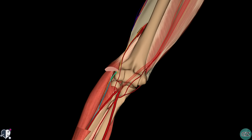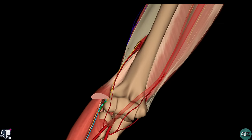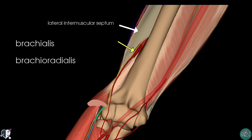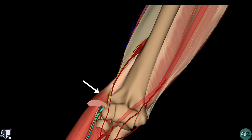Having given off these two sensory branches, the radial nerve then passes through the lateral intermuscular septum to enter the anterior compartment, where it is situated between the brachialis muscle and the brachioradialis muscle. To enter the forearm, the radial nerve moves anteriorly over the lateral epicondyle of the humerus through the cubital fossa.